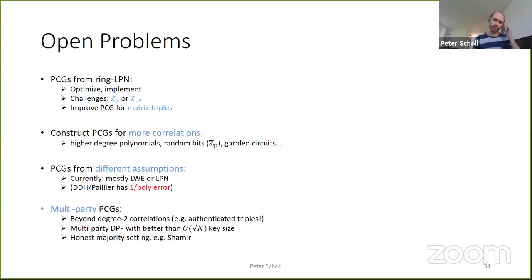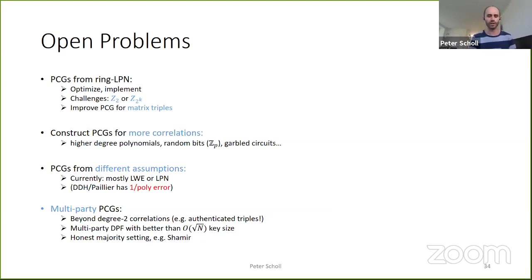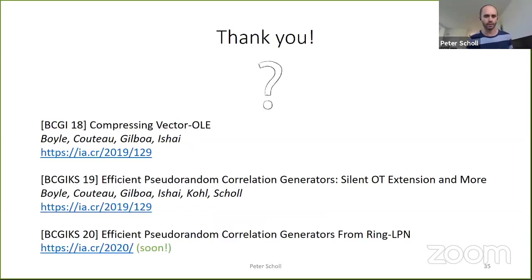Also, in the multi-party setting with honest majority, things like Shamir shares of random values or random triples would be interesting. The three papers most of what was presented is based on are referenced, with the last one coming to ePrint soon.